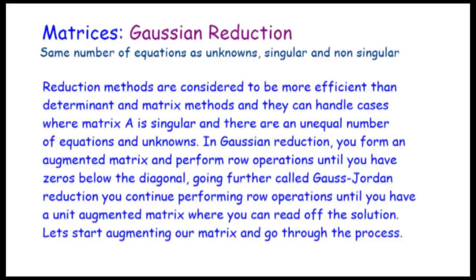Gaussian reduction is supposed to be more efficient than the determinant and matrix methods. You might remember that if the coefficient matrix was singular, you couldn't use those determinant and matrix methods — but Gaussian reduction can handle these situations.